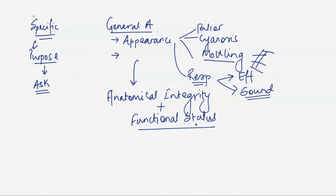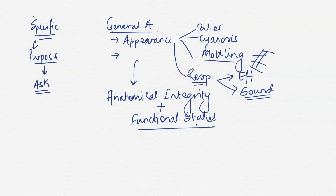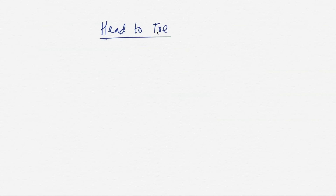These two terms — anatomical integrity and functional status — apply to any examination, whether DVT, cardiovascular, or neonatal. They build a good structure signaling that your examination will assess anatomical components and ask the patient to perform functional tasks to confirm those organs are working properly. Different people start in different ways — some from the hands going to the head, others from the head going to the arms. As long as you don't miss important points and it looks fluid, either approach is fine.